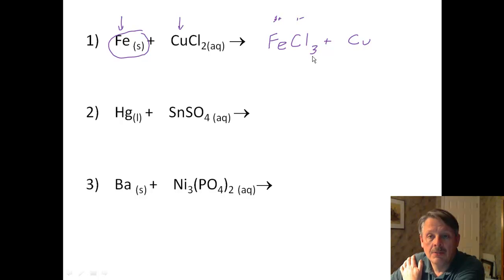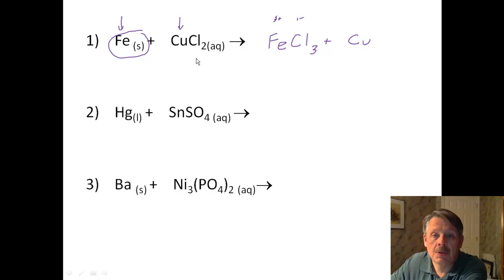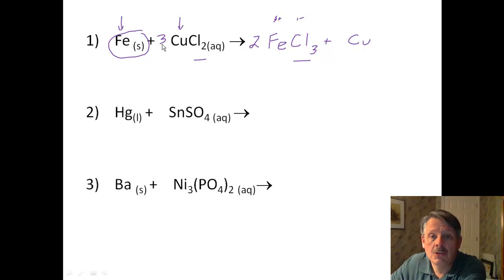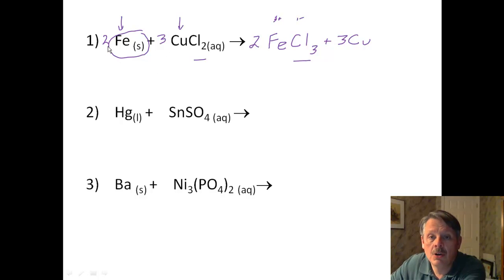Now we have to balance our equations. We have 2 chlorines on the left and 3 on the right. We have to use coefficients — they have to be a 2 and a 3 so that we have a total of 6 chlorines on both sides. That means we have to have 3 coppers on the right and 2 irons on the left, and now we are balanced.